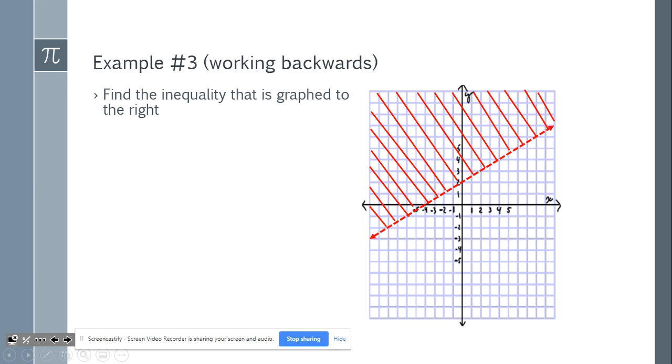Here's an example of working backwards. Let's find the inequality that is graphed to the right. So the first thing I want to do is put my y. We know that we're going to have y, and we know that we have to have an inequality sign. Pause the video at this point to see if you can figure out the inequality.